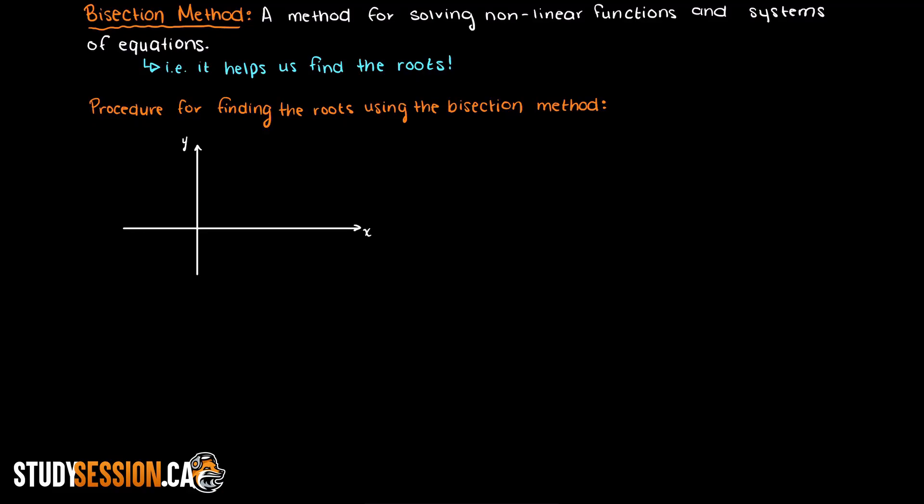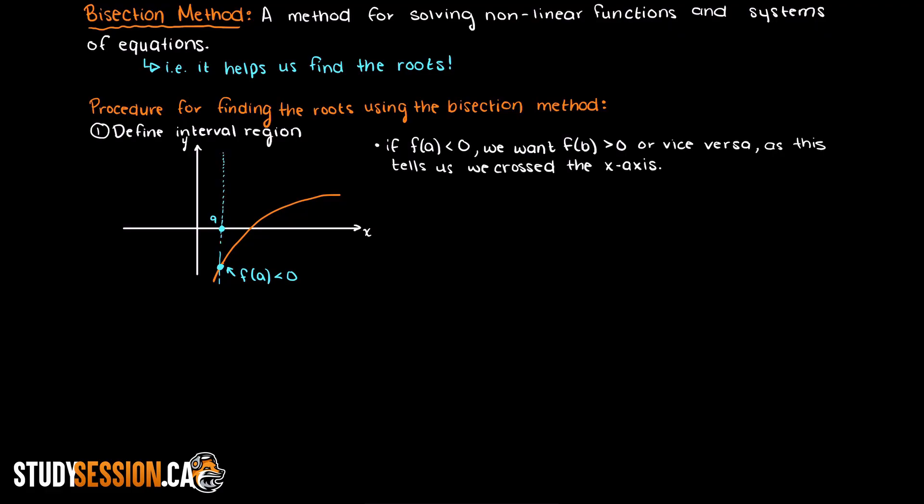Let's say we have a function that looks like this. Step 1, we define a region, two x values, for which we know that there is a root present. But how do we know this? Well our first input of x, which we will call a here, will have either a positive or a negative output. Whatever output we receive from input a, we want the output from input b to be the opposite. This ensures that our function crossed the x-axis. One way of validating this is multiplying the two outputs together, as one needs to be positive and one needs to be negative. The product of these two outputs will never be greater than zero.